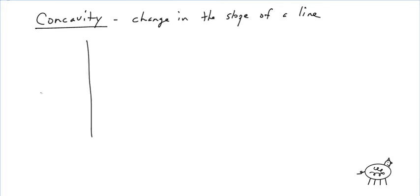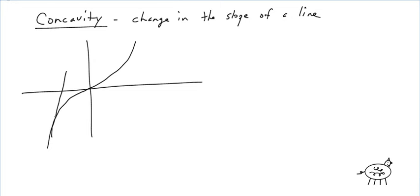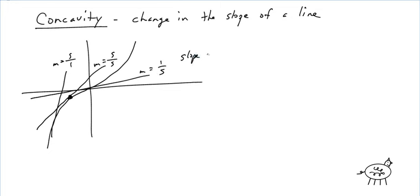Let's make a quick graph to show what concavity is. If I draw three different slopes, this slope might be 5 over 1, this might be 5 over 5, and this might be 1 fifth. So the slope is going from bigger to smaller — from 5 to 1 to 1 fifth. The slope is decreasing, which means it's concave down.